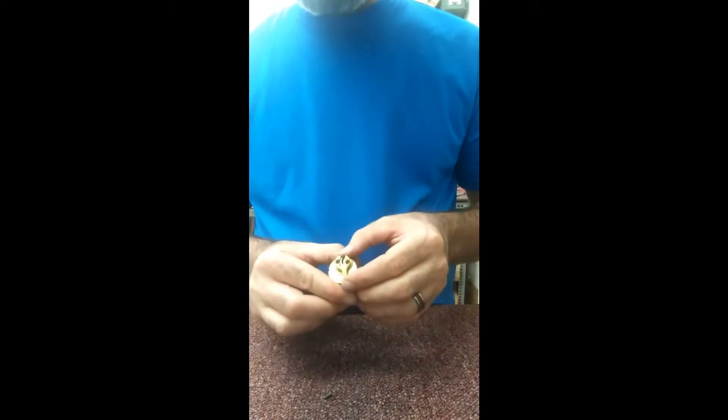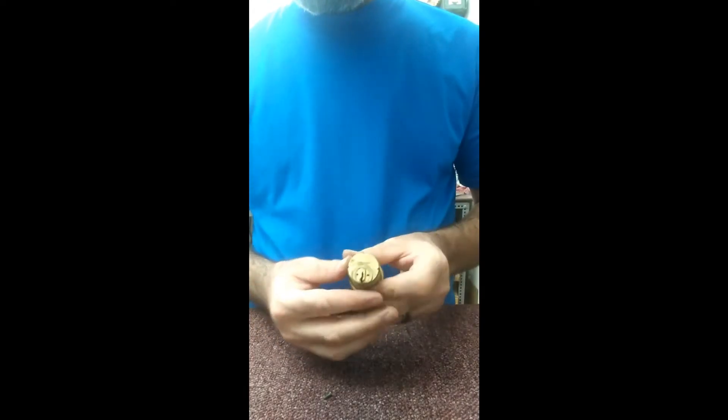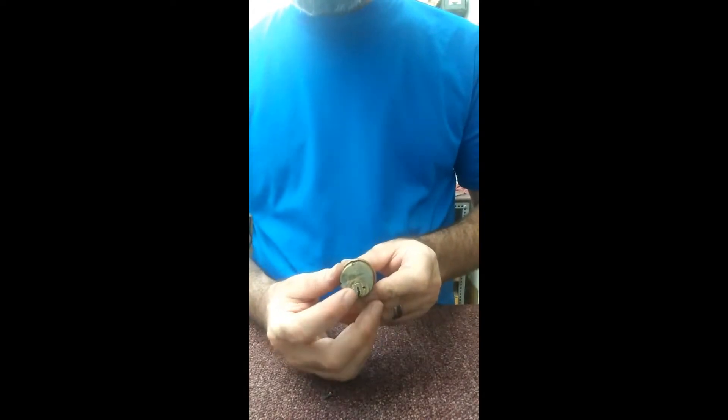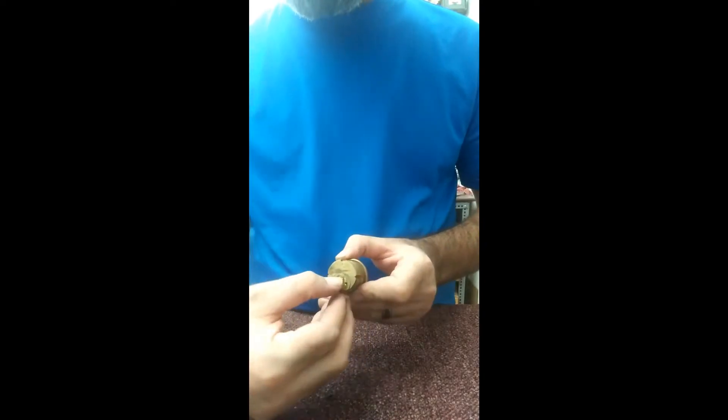So anyways, two screws are off, tailpiece pops off. Alright, so just like shimming any other lock, you want to put the shim up here between the top of the barrel and the top of this housing right there.